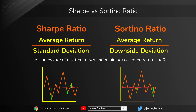The Sortino ratio is adjusted to measure the standard deviation only when the return is negative, or below a baseline for the minimum accepted return. A return below the mean but above zero will not be counted. This means any positive return will not negatively affect the rating.